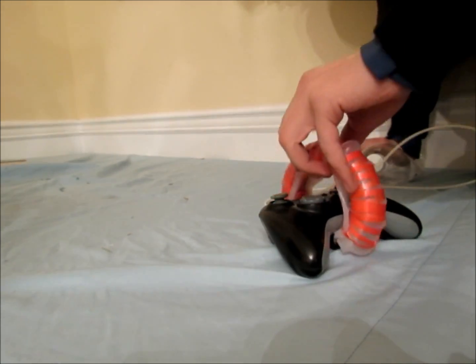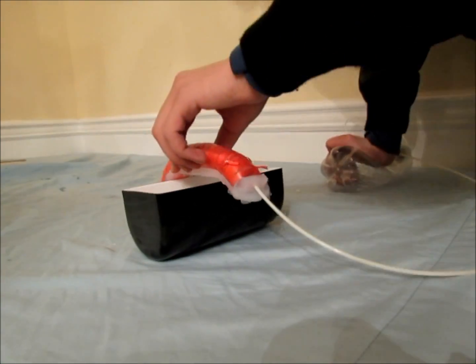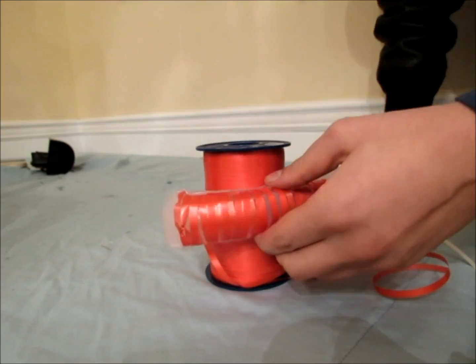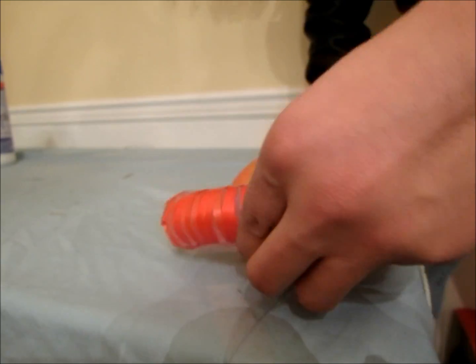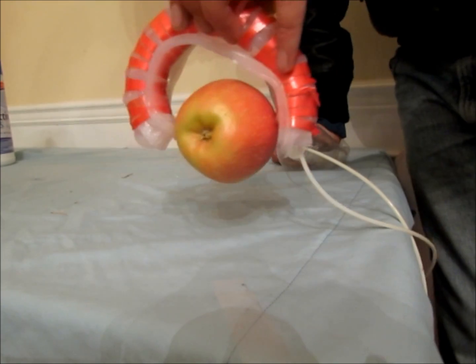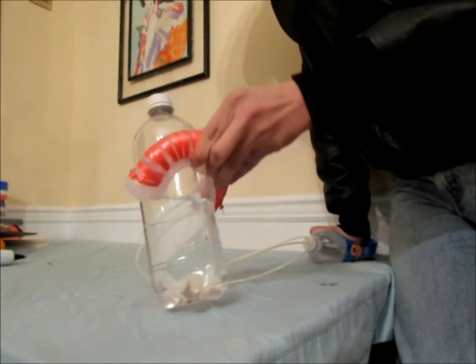And that's it. You have just made a simple soft robotic gripper. This technique is not limited to just fabricating simple robots like the one shown. It can be built upon to make robots of varying sizes and complexity. All you need is a little ingenuity, cardboard, tape, and hot glue. Thank you for watching.